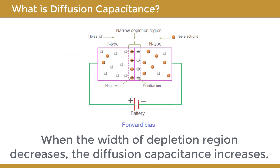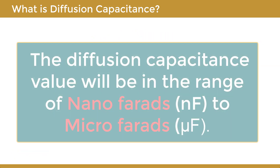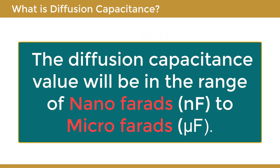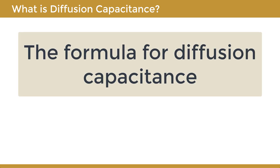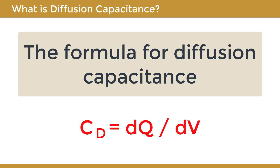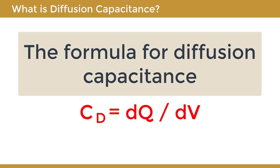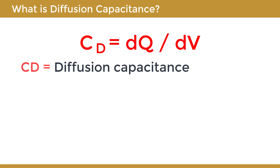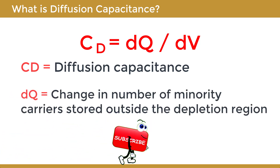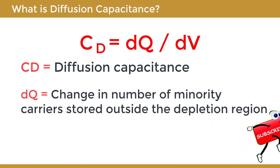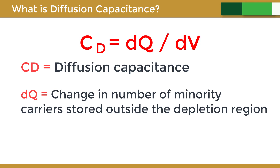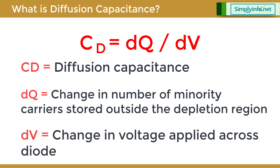When the width of the depletion region decreases, the diffusion capacitance increases. The diffusion capacitance value will be in the range of nanofarads to microfarads. The formula for diffusion capacitance is CD equals DQ by DV, where CD is the diffusion capacitance, DQ is the change in the number of minority carriers stored outside the depletion region, and DV is the change in voltage applied across the diode.